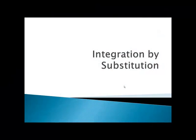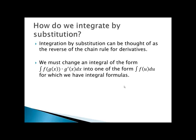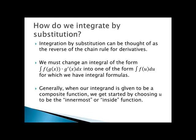Integration by substitution can be thought of as the reverse of the chain rule for derivatives. We change an integral of the form f evaluated at g of x times g prime into one of the form f evaluated at u, for which we have integral formulas. Generally, when our integrand is a composite function — one function inside of another — we get started by choosing u to be the innermost or inside function.